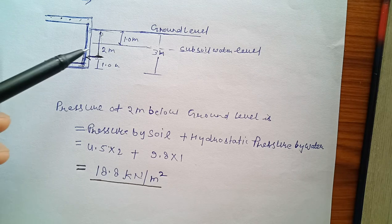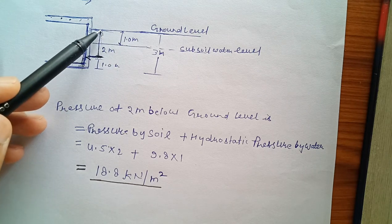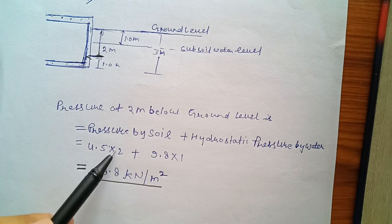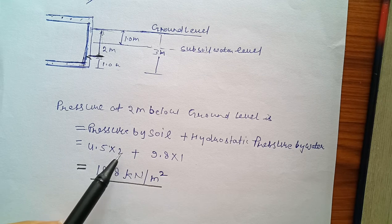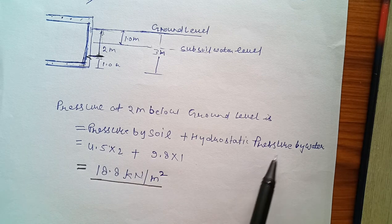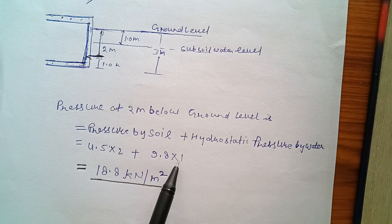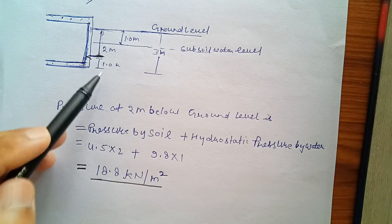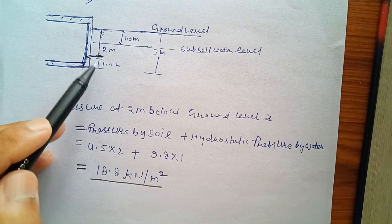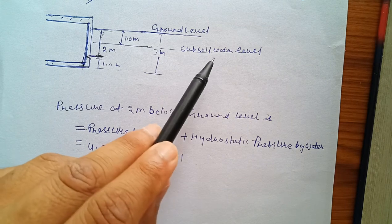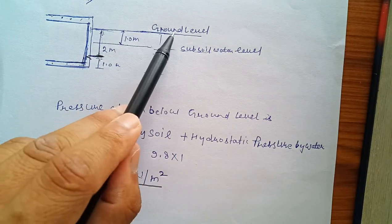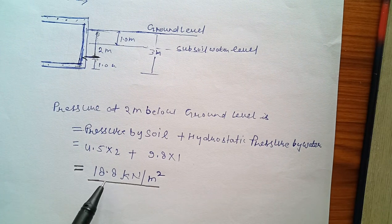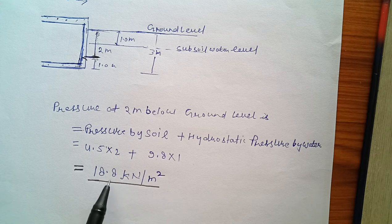Pressure at two meters below ground level is equal to pressure by soil plus hydrostatic pressure by water. Pressure by soil will be 4.5 kilonewtons per square meter times the depth, that is two meters height, so simply times H. Then plus hydrostatic pressure by water: 9.8 times one. Water from subsoil water level is this, and this is the ground level. So we calculate this and putting the value in formula, 18.8 is the answer.